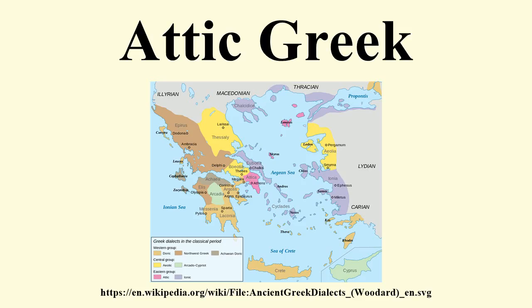Attic tends to replace the suffix '-ter' with '-tes', for example 'dikastes' for 'dikaster' (judge). The Attic adjectival ending '-eios' and corresponding noun ending, both two syllables with the diphthong, stand in place of '-eios' with three syllables in other dialects. For example, 'politia' versus Cretan 'politia' (constitution), both from 'politeia' where the W drops out.